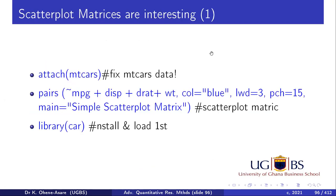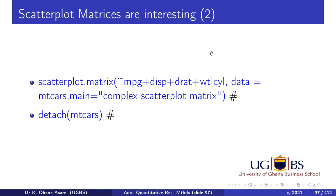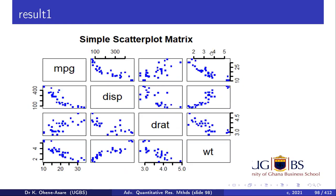And then scatter plot matrices. Go through the commands that are given there to showcase a scatter plot matrix. When we come to regression, I'll be showing you scatter plot matrix. This is a typical example of a scatter plot matrix.